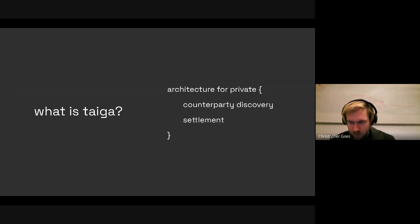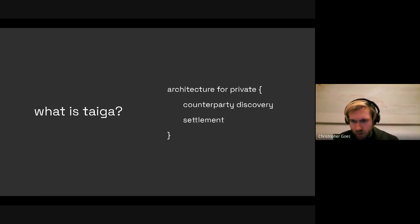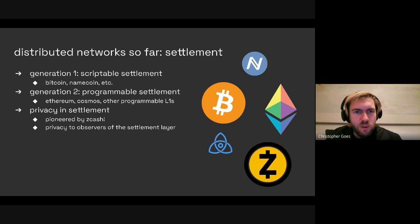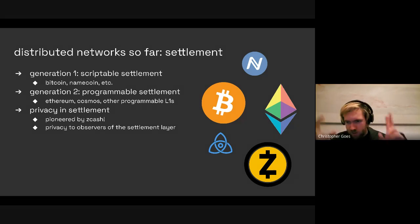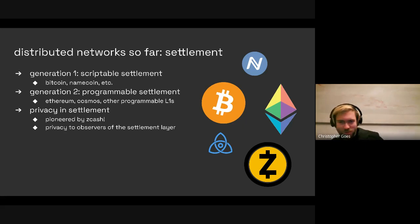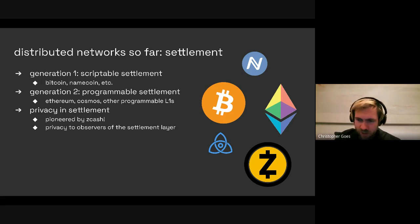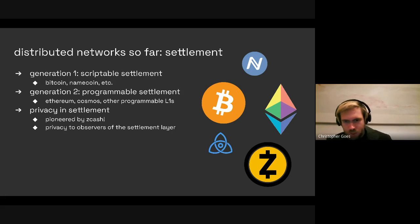Taiga is an architecture for private counterparty discovery and settlement. In our conceptualization of Anoma, we use a different frame for thinking about what problem we're trying to solve. Going through the history of distributed ledgers, we started with Bitcoin — Generation 1. Bitcoin had a simple form of programmability; I like to call this scriptable settlement. Bitcoin had a UTXO-based system that was not private, did not involve ZK-SNARKs, but allowed some level of programmatic unlocking conditions.